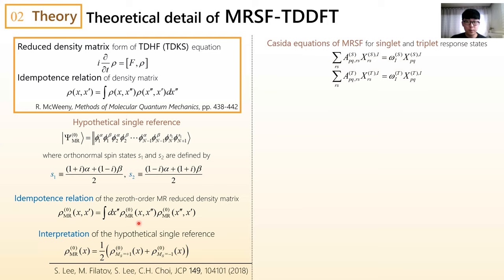With the idempotent reduced density matrix of mixed state and mixed reference, the Casida equation can be derived. And Casida equation for singlet and triplet response states are completely decoupled. However, a coupling between configuration generated from M_S = +1 and -1 references vanish. So, a posteriori spin-pairing coupling is introduced in this version of the method.